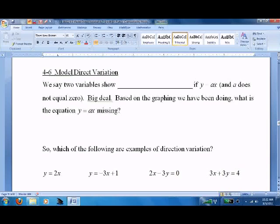So we'll talk about that more, but let's say two variables show direct variation if y equals a times x and a doesn't equal zero, which would be kind of pointless. So big deal, what's that mean? I mean, so far, what's this equation missing based on the graphing we've been doing?